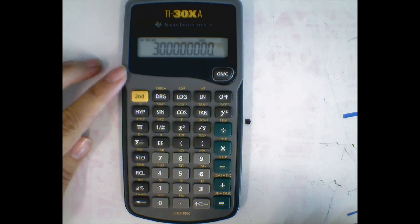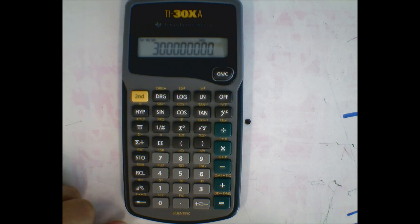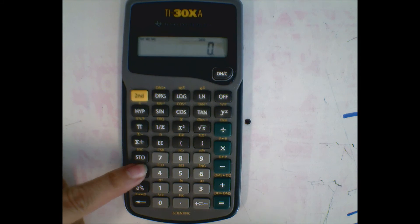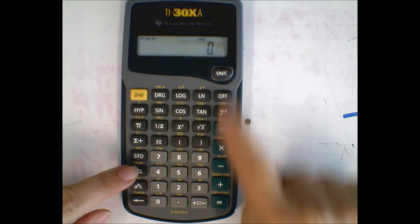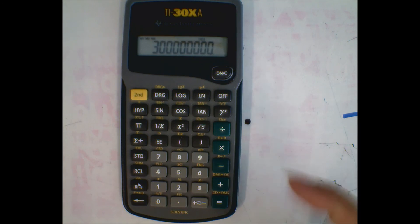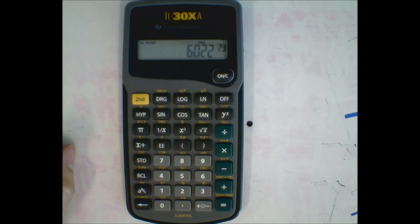These calculators will store three numbers, and the way to get them back is just hit recall and then the number. If I'm going to see what recall 2 is, that's also 3 times 10 to the 8th. Recall 1 is the mole number.